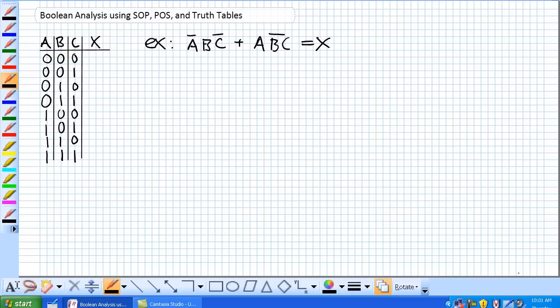So it looks like our sum of products is not A and B and not C or A and not B and C equals our output X. What are the bit combinations that are going to give us a 1? In this case it's going to be 0, 1, 0. And in this case it's going to be 1, 0, 1.